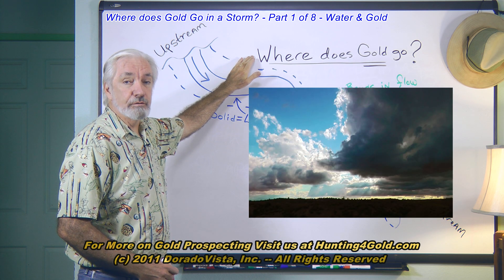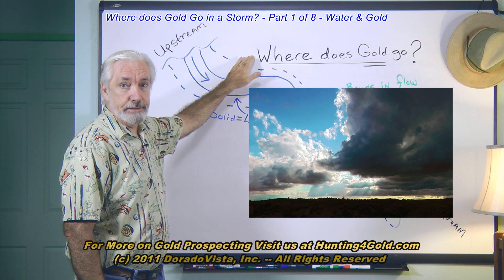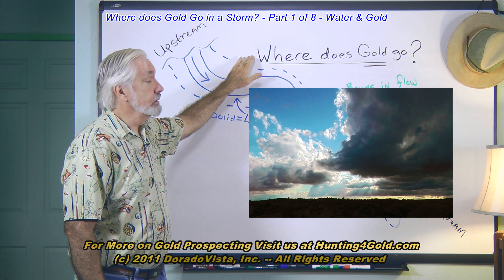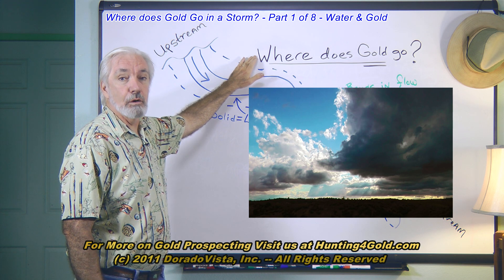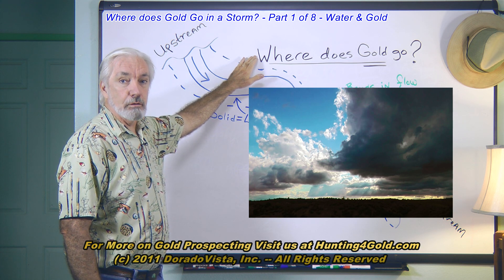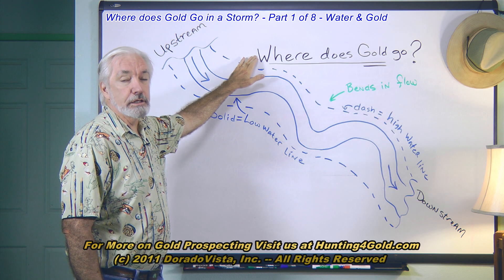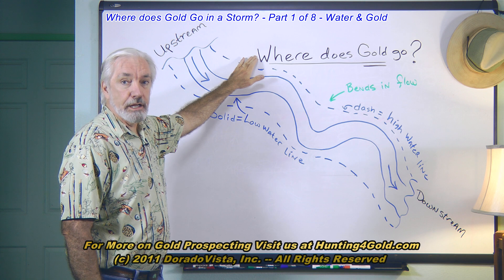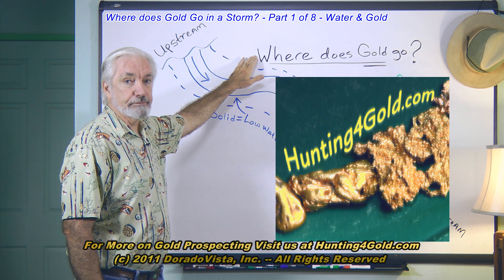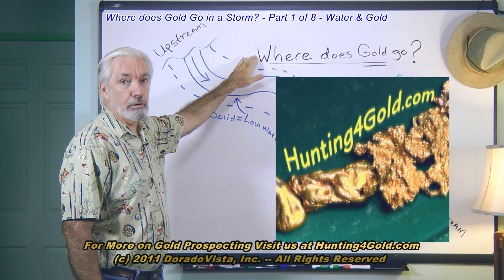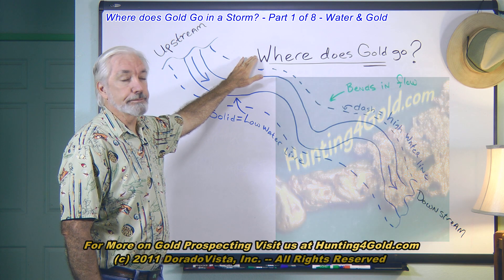Gold is moved around on the surface of the earth by water primarily, and by man. The big focus here is going to be on water — specifically how gold moves from lode, which is the host rock, into stream beds to form nuggets and coarse gold deposits, as well as flour gold, so fine that it floats on the surface if it has a chance to.